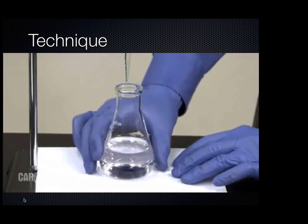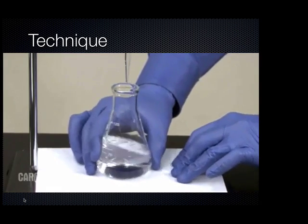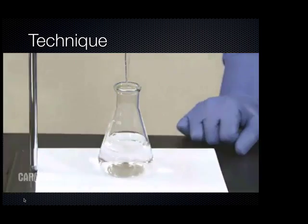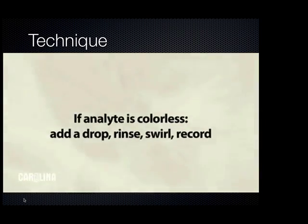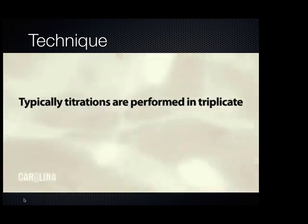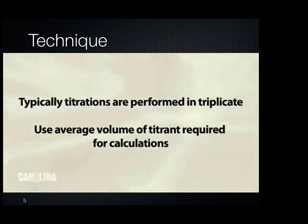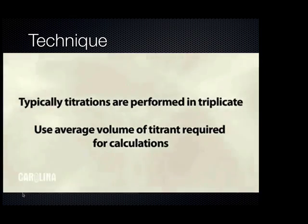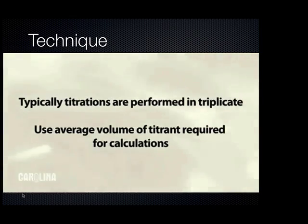If the analyte remains faintly colored, then you have reached the endpoint. If the analyte is still colorless, then repeat these steps. Add a drop, rinse, swirl, and record until a faint color persists. Typically, titrations are performed in triplicate. Use the average volume of the titrant required to reach the endpoint for any calculations. You now know how to properly perform a titration.